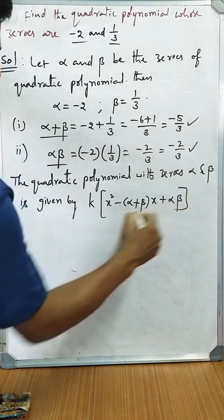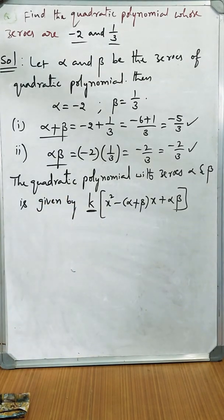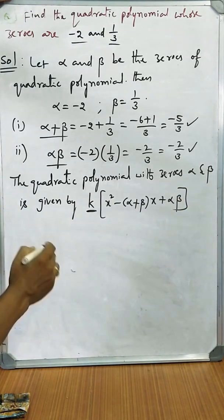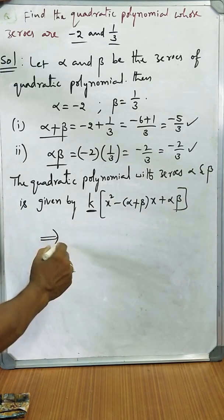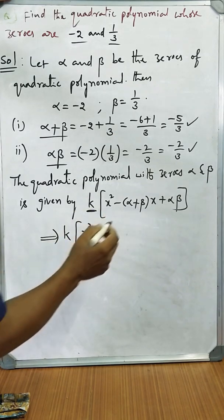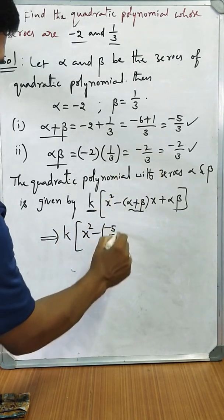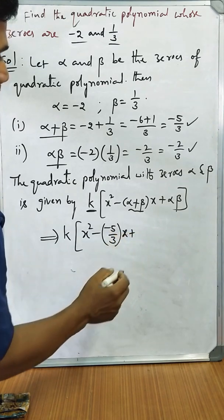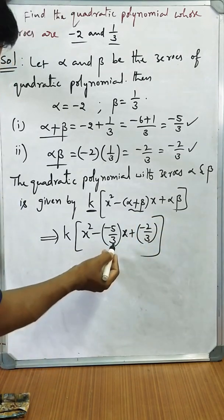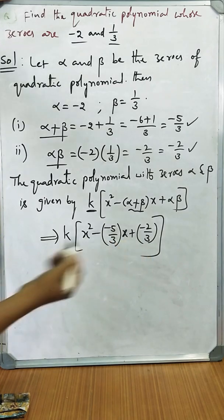This gives k times [x² - 5/3·x + (-2/3)]. Why we take k times means to avoid the fractional coefficients for x and constant. Let's substitute: k times x² minus 5/3 into x plus -2/3. Clearly you can observe the x coefficient is a fractional coefficient and constant is also a fraction.